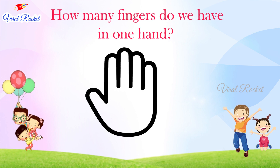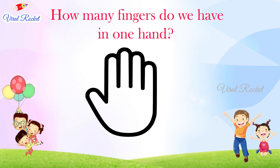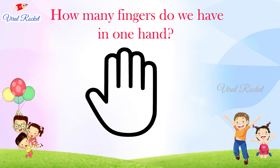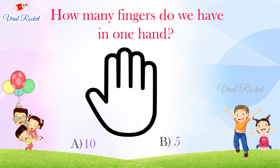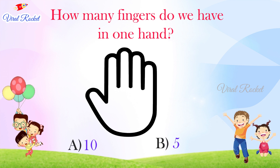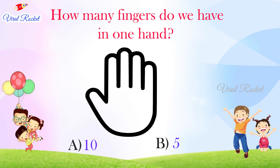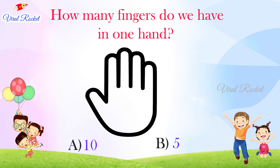How many fingers do we have in one hand? The options are: A. 10, B. 5.